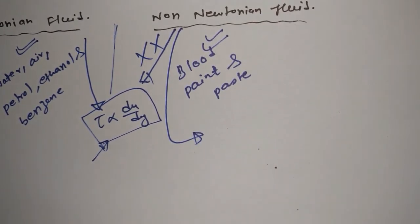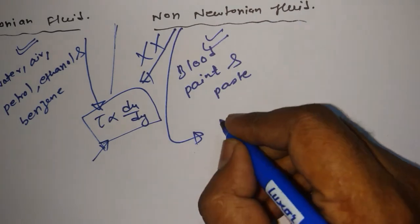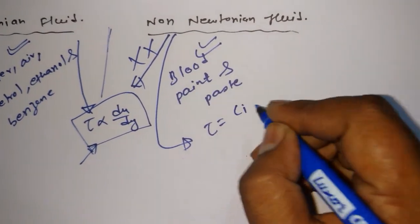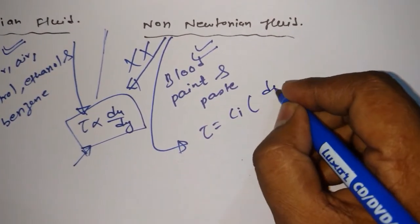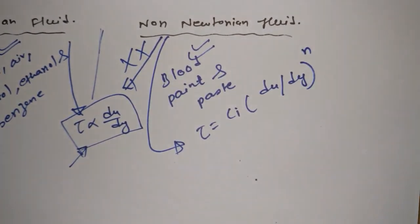So, here is the equation which will be obeyed by non-Newtonian fluid. What's that? Tau is equal to Ci, don't worry, I will tell you what is Ci, du upon dy whole to the power n.